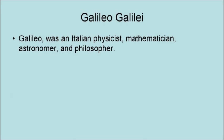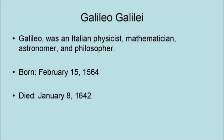Galileo was an Italian physicist, mathematician, astronomer, and philosopher. He was born on February 15, 1564, and he died January 8, 1642.